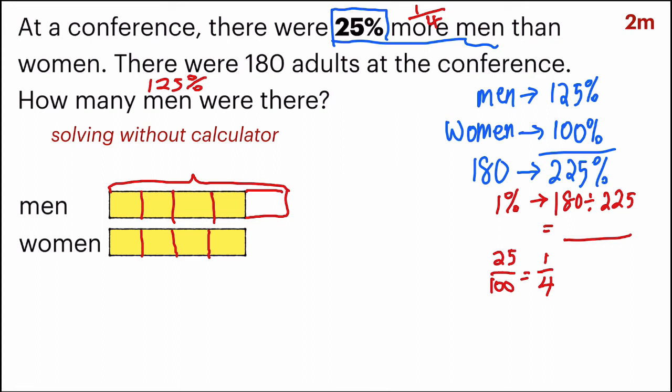Or I can say 125%. And for women, there will be four units, or 100%. And the total of this is 180 adults.